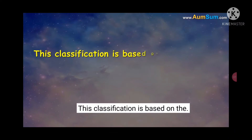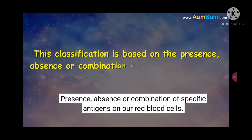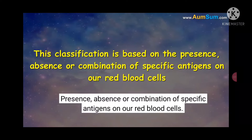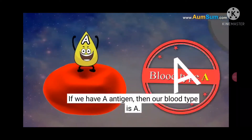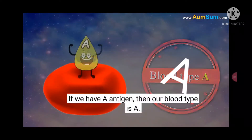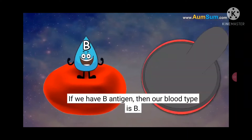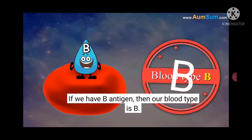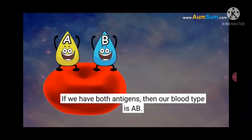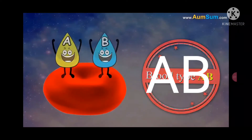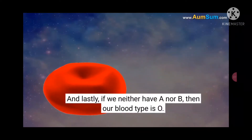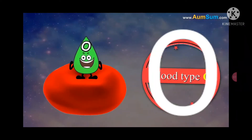This classification is based on the presence, absence, or combination of specific antigens in our red blood cells. If we have A antigen, then our blood type is A. If we have B antigen, then our blood type is B. If we have both antigens, then our blood type is AB. And lastly, if we have neither A nor B, then our blood type is O.